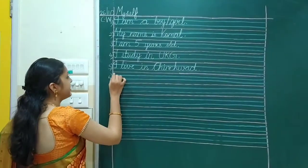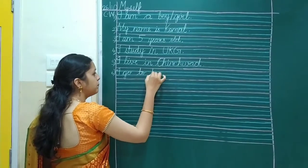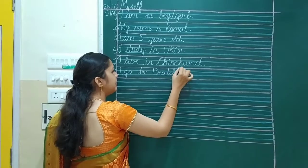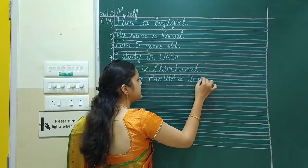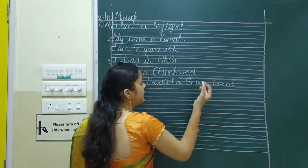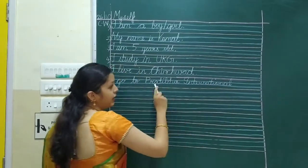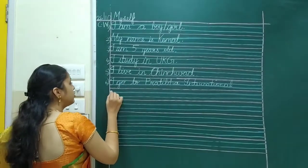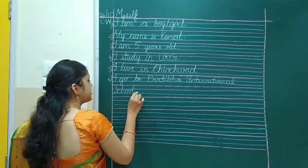And the last sentence is I go, G-O go, T-O to, P, your school's name, Pratibha, P-R-A-T-I-B-H-A. Pratibha. International, I-N-T-E-R-N-A-T-I-O-N-A-L. International. Now here are the words Pratibha, International. They are big. So you are also going to practice these words five times. Pratibha, International, School. S-C-H-O-O-L, school. Even you are going to practice this word.